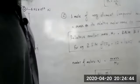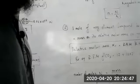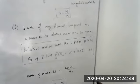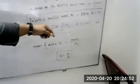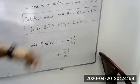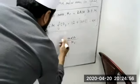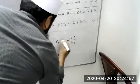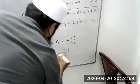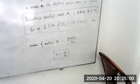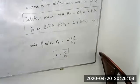The first formula is n equals N divided by Ar, where capital N stands for the number of particles. The second formula is: number of moles equals mass divided by molar mass. We use small n to represent moles.